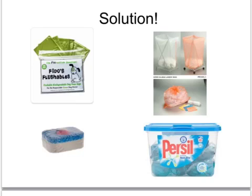On the bottom left we have a dishwasher tablet with a soluble plastic coating that will dissolve in the dishwasher and release the detergent. And finally, washing liquid is already measured into small capsules which will dissolve in the hot water of the washing machine.